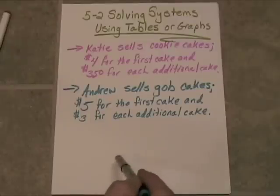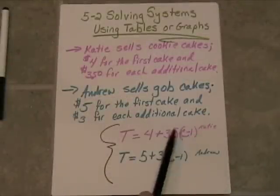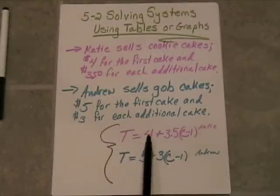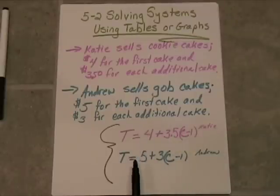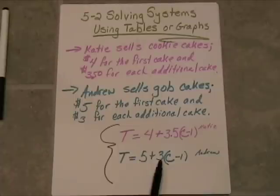Alright, so we can actually solve this question algebraically. Minus 1, because the first one costs $4. So all the ones thereafter are going to be sold at $3.50. Now, the same thing is going to happen down here for Andrew. $5 for the first one, and $3 for the number of cakes sold minus 1.